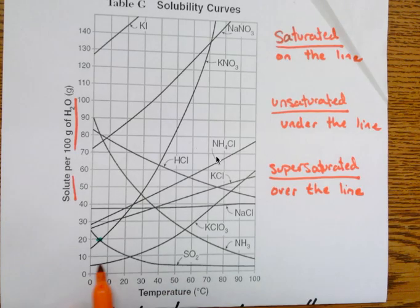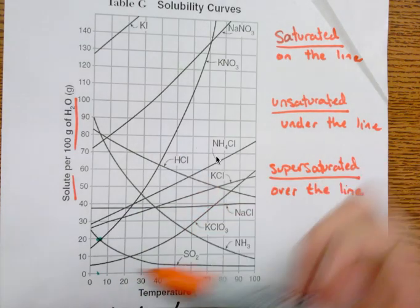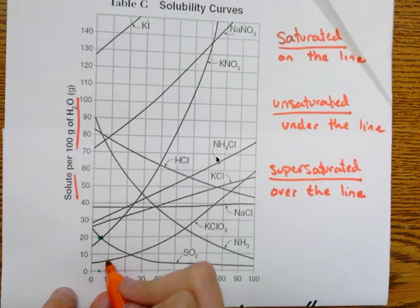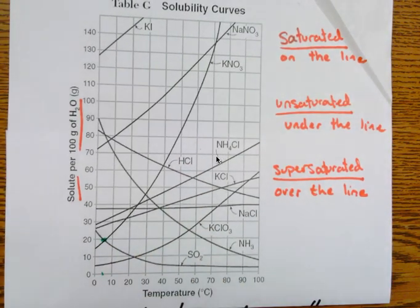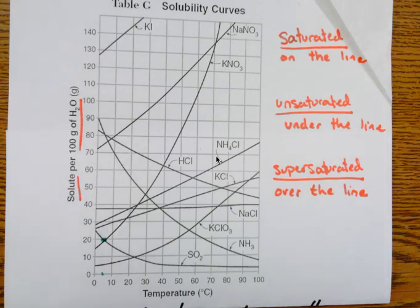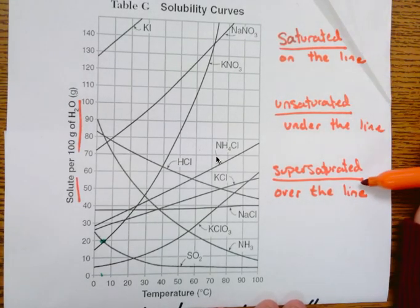Each of these individual lines represents a different compound, and as temperature changes, the amount changes as well. The nice thing about solubility graphs is we can use them to describe a solution as one of three things: saturated, unsaturated, or supersaturated.